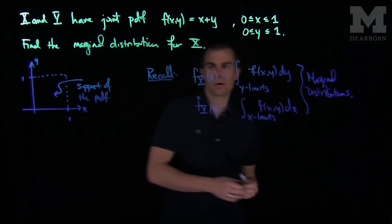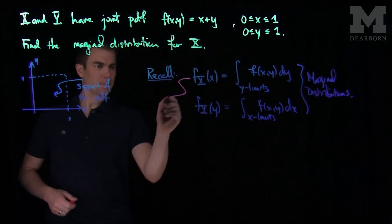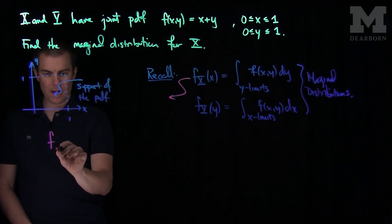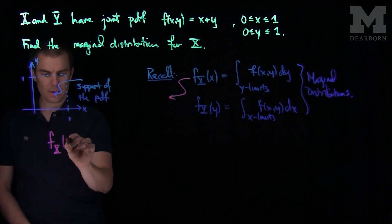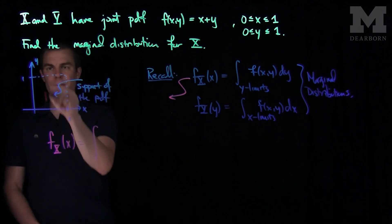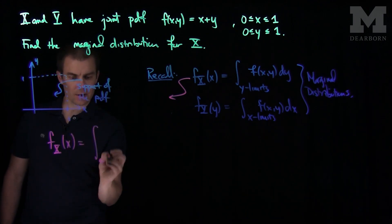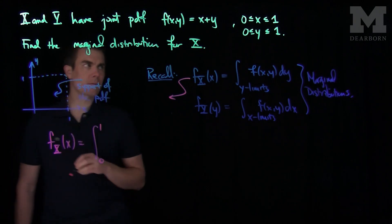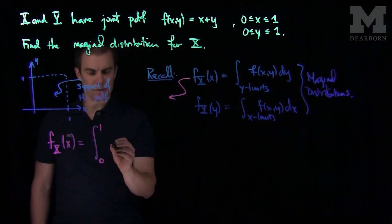Now we will find this one in our problem. For our problem, f_x(x) is the integral - in this region, y varies between 0 and 1 with no constraints on x. So we are going to integrate y from 0 to 1, and then we will put in our pdf, x plus y.